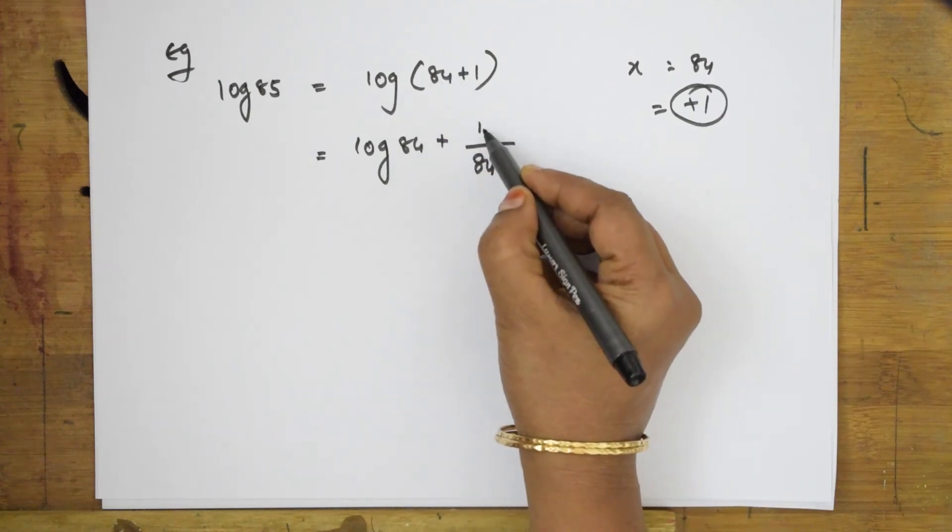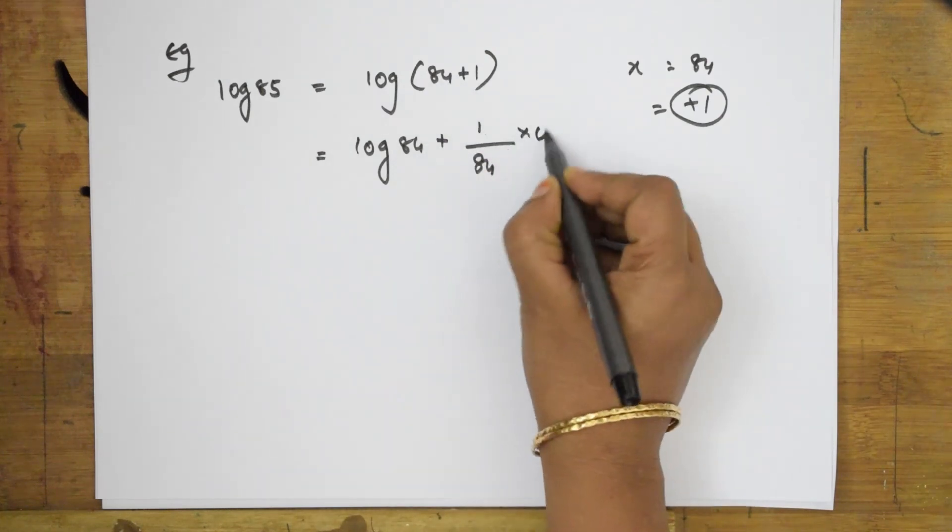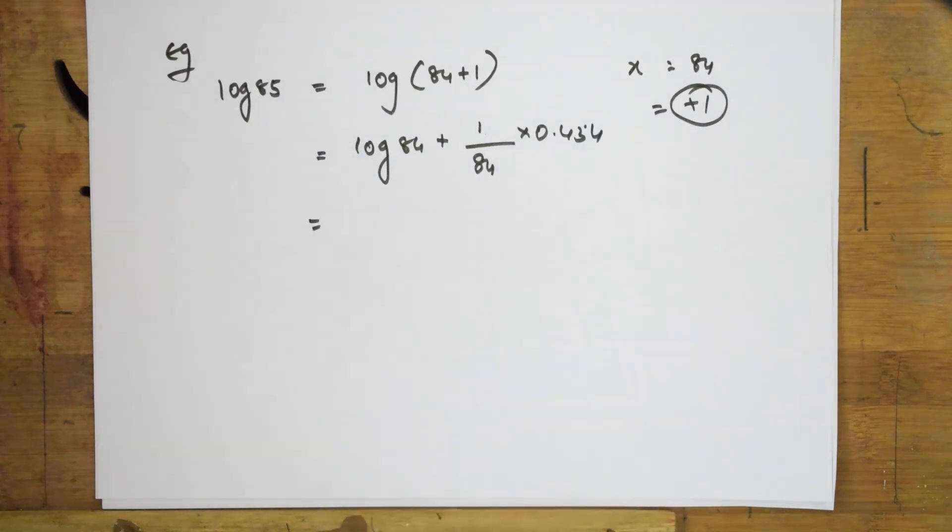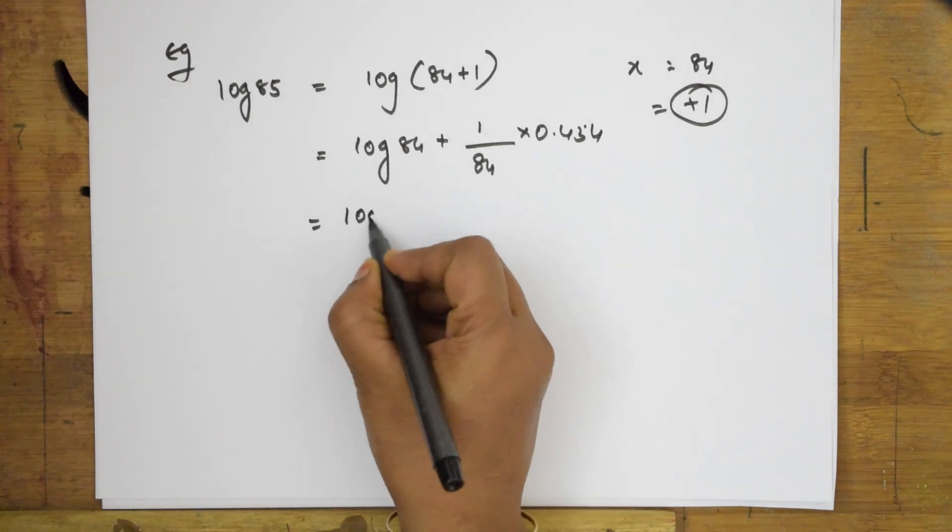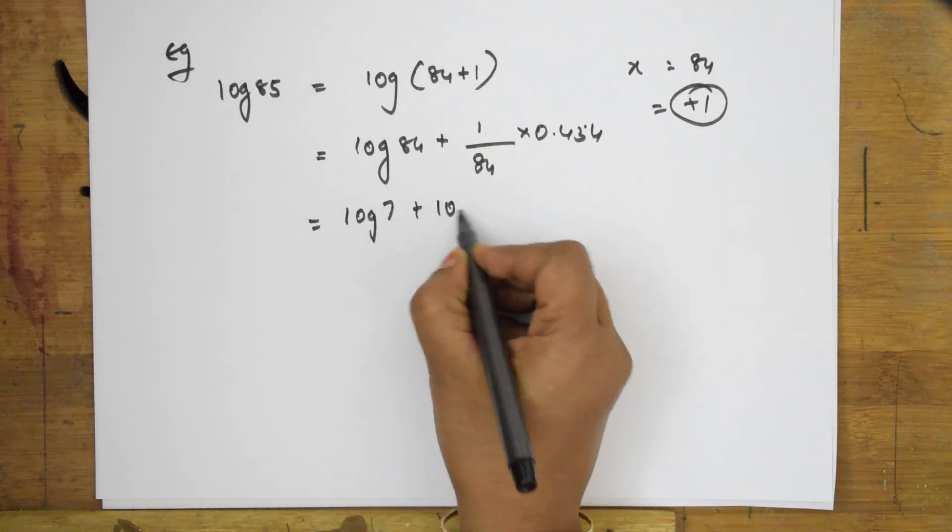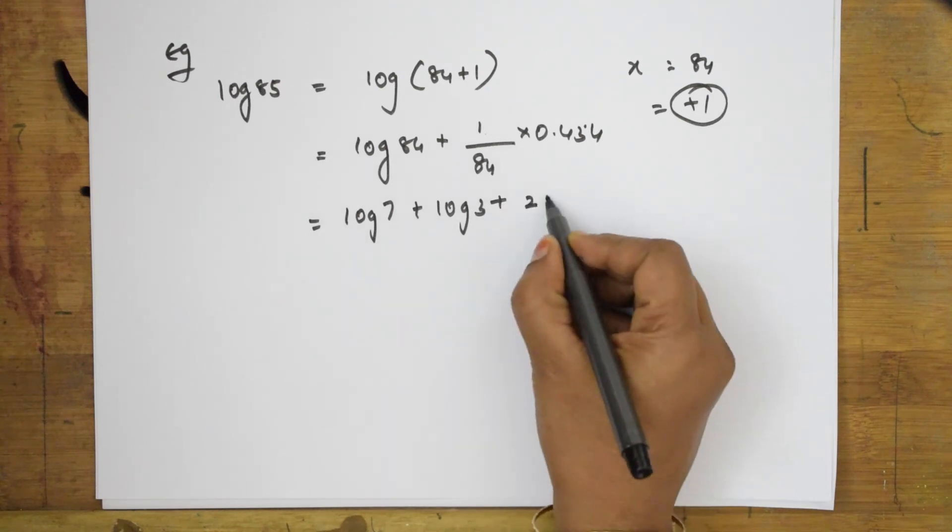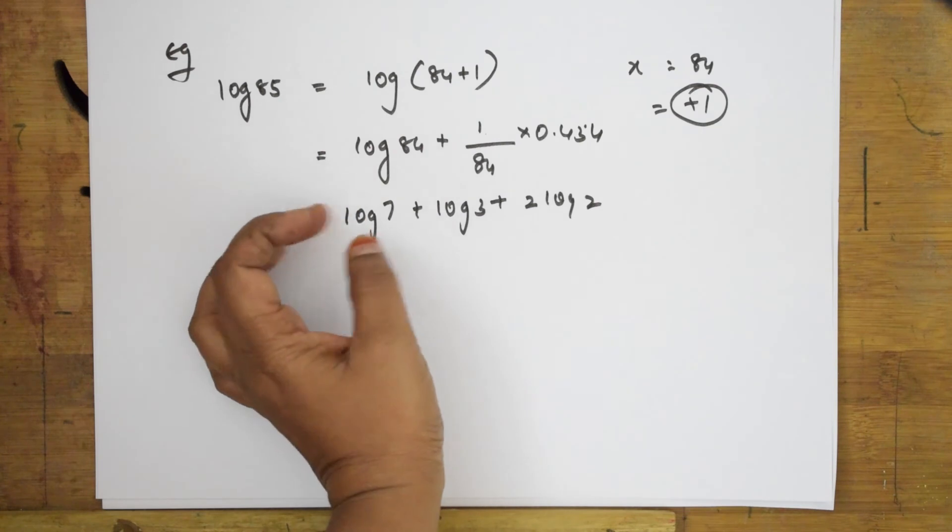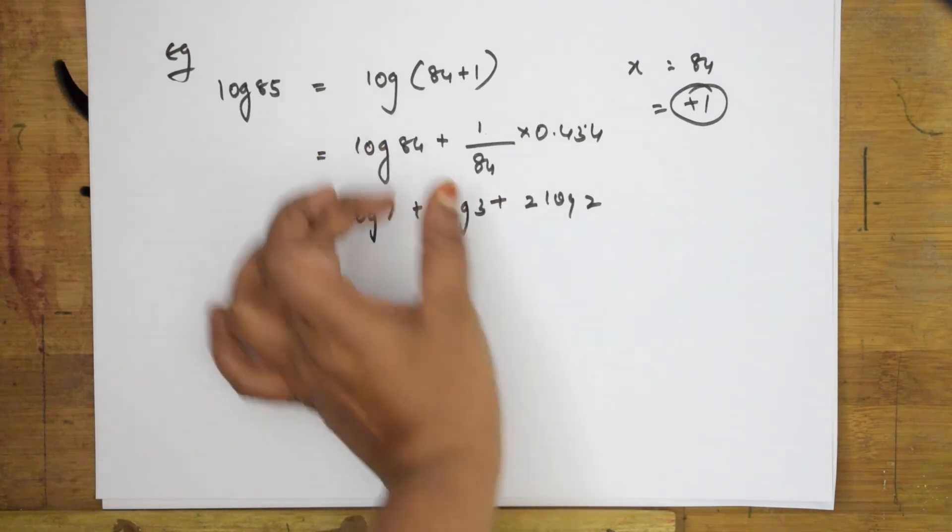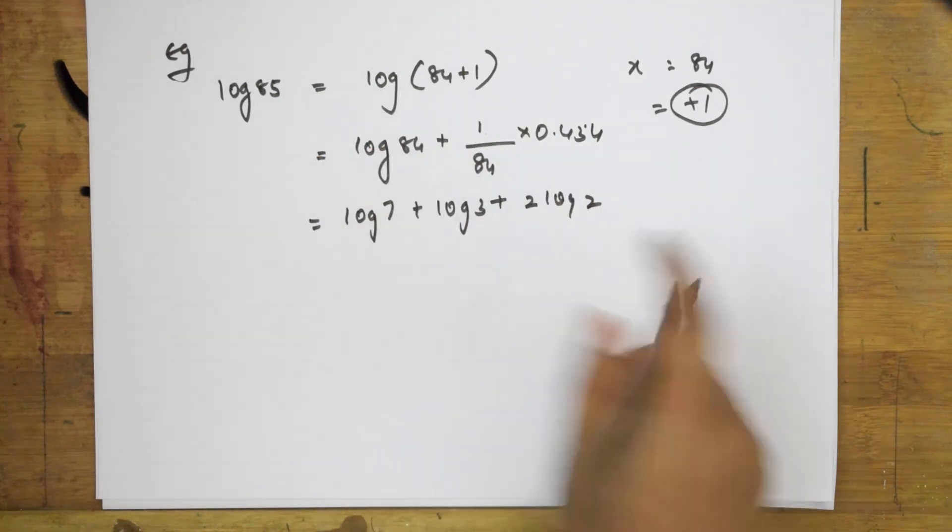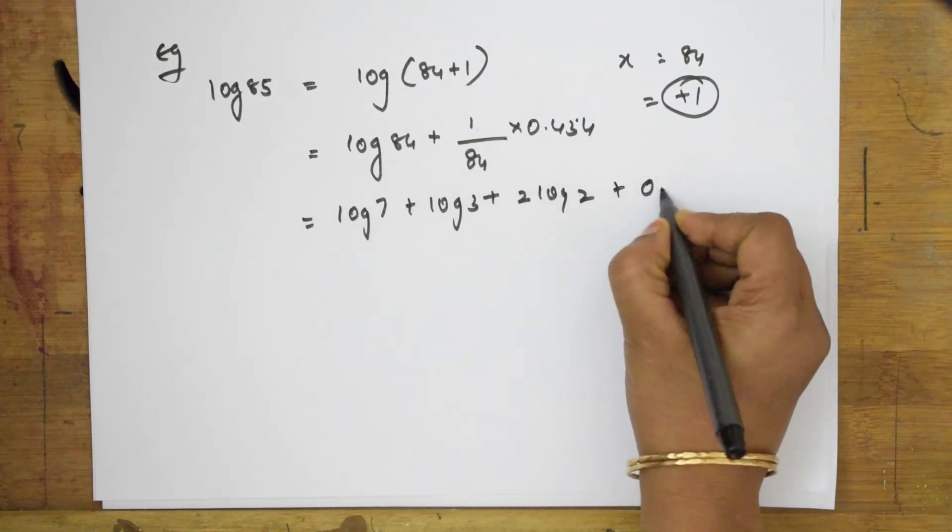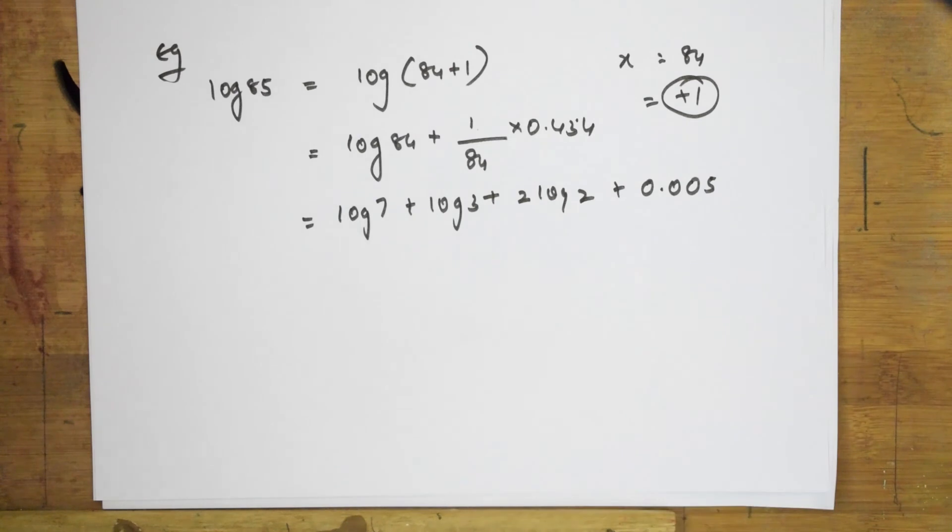d/dx I have written in this form. 1/x into the correction factor 0.434. When I solve this particular thing, how can log 84 be written? It can be written as log 7 plus log 3 plus 2 log 2. This particular thing like whole concept will be equal to this. Now, when I solve 1/84 × 0.434, I get an answer of 0.005 incremental value.